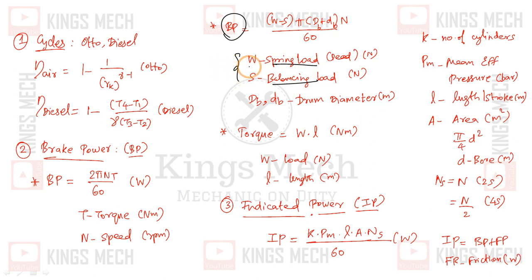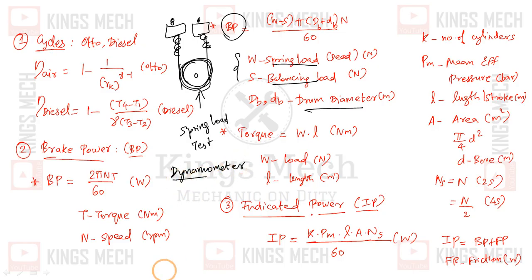For load testing, we use spring load and balancing load. The load formula is load times pi times drum diameter. A drum is fixed, and the load is measured using springs connecting to the cylinder and flywheel. This arrangement is called a spring load test or rope brake test, which is a mechanical dynamometer used to measure engine performance.